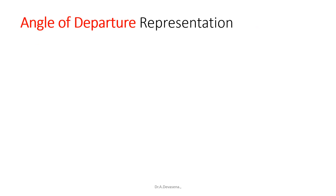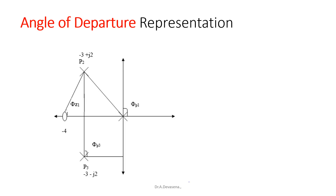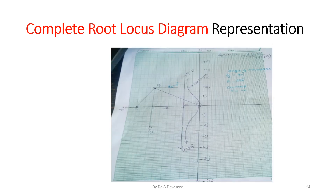To summarize the angle of departure representation: we have one real pole at s = 0, two complex poles at s = -3 ± 2j, and one real zero at s = -4. From point P2, angles are drawn to all other poles and zeros to compute the departure angle. The complete root locus diagram has a centroid at -1 and asymptotes at 90° and 270°.